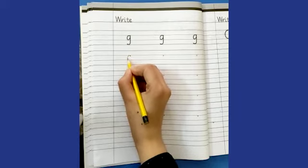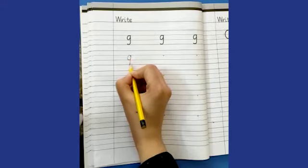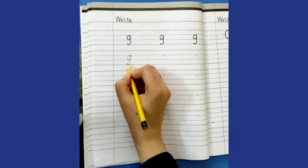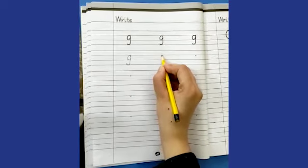Starting point. Make a curve. Go up. Come down and down. Turn around. Again.